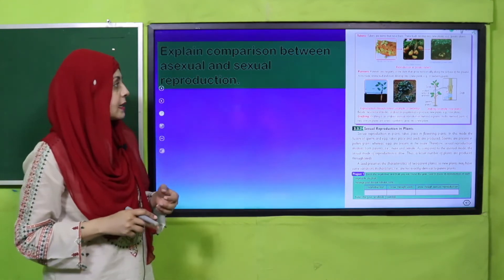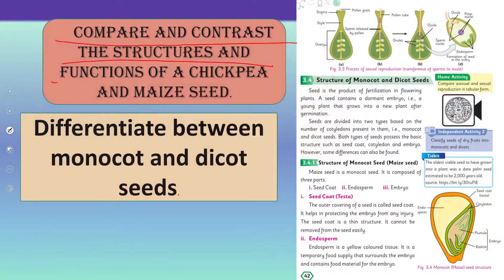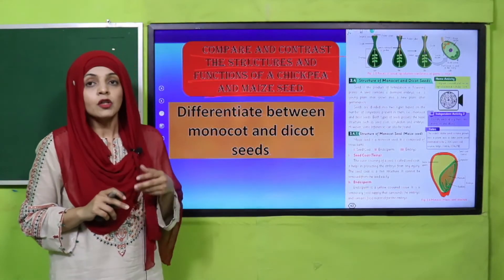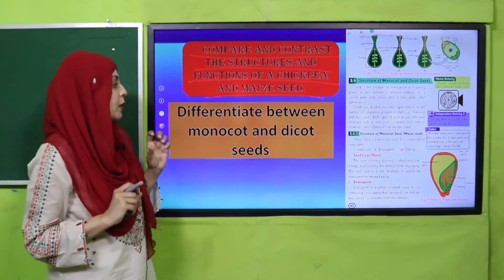Very good, excellent. Now we will move forward. In the next lecture, we compared and contrasted the structures and functions of chickpea and maize seeds. Humne compare kiya tha — maize ek monocot hai aur chickpea ek dicot hai. Monocot seeds mein single cotyledon hota hai aur endosperm present hota hai, whereas in dicots there are two cotyledon leaves and endosperm is absent. Maize seed is monocot whereas chickpea seed is dicot. Now quickly differentiate between monocot and dicot seeds.